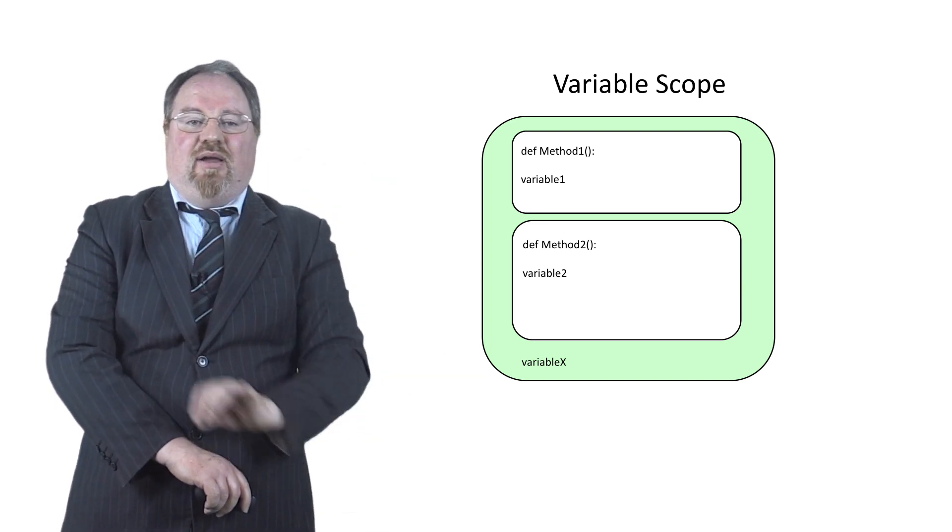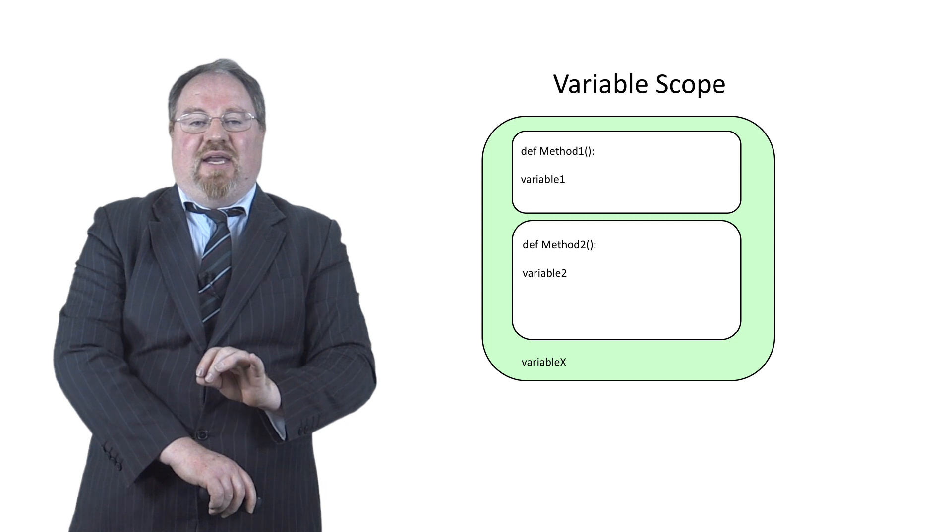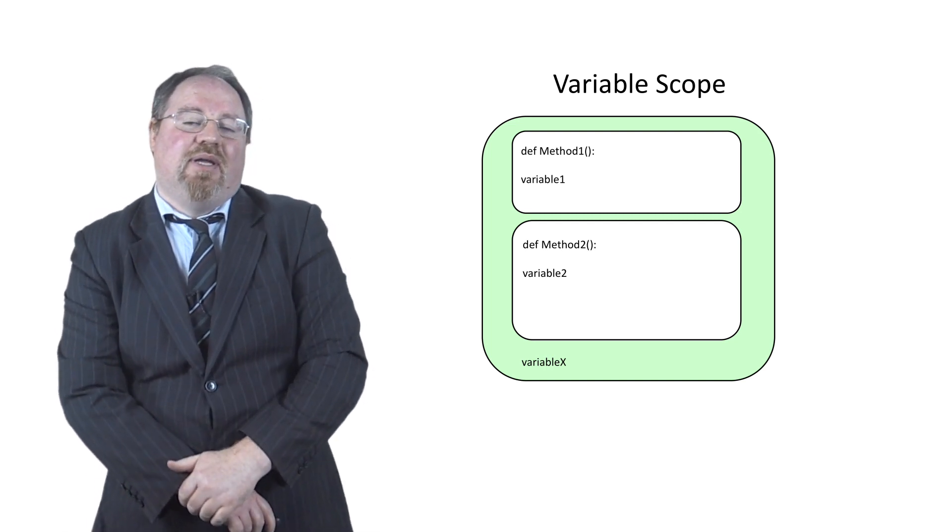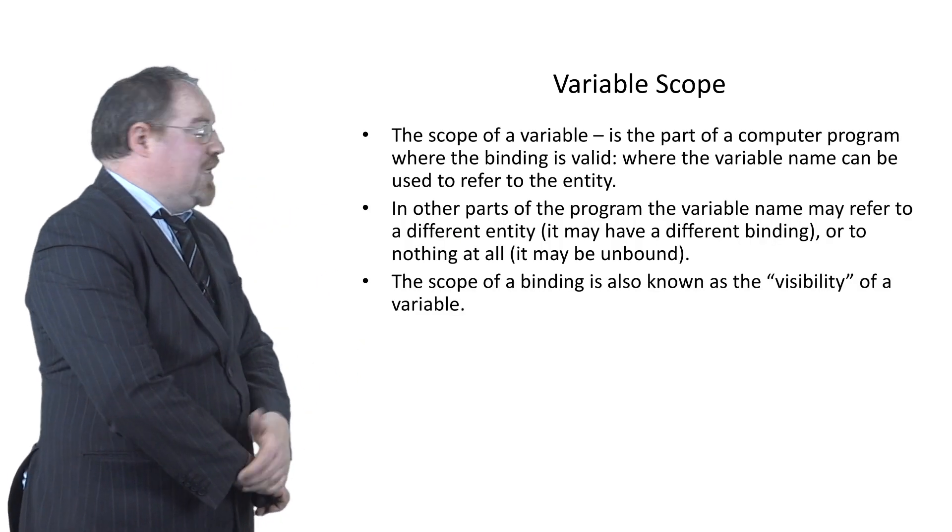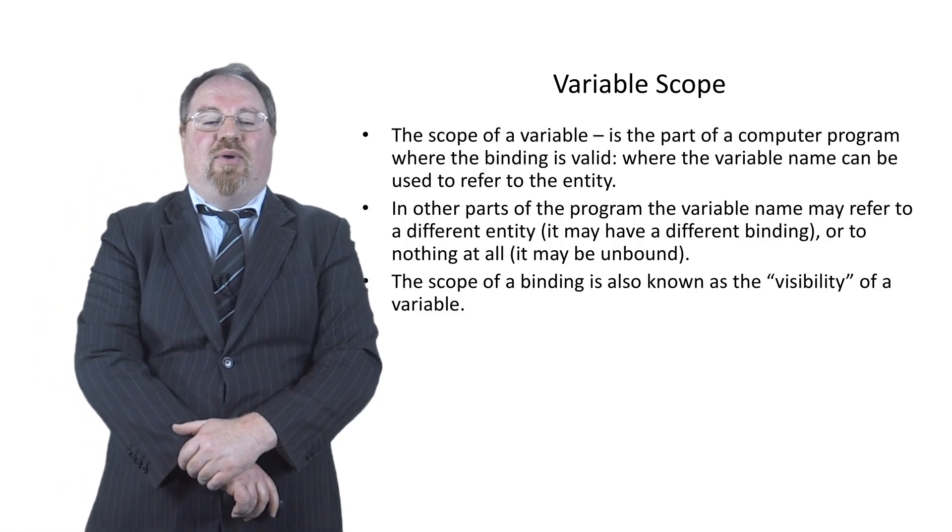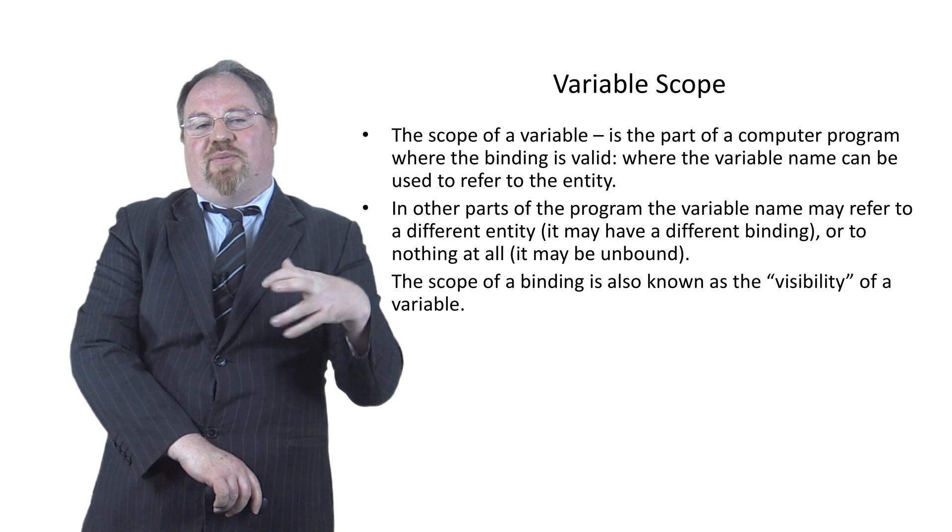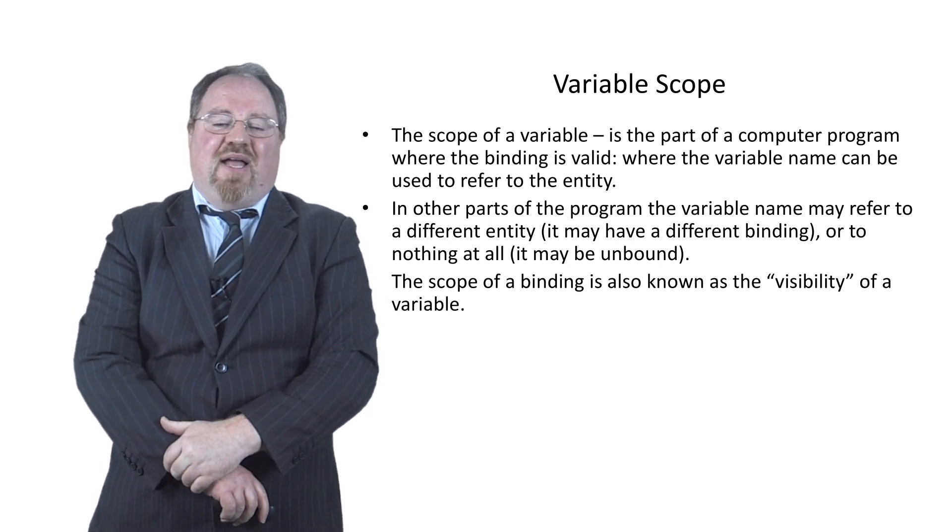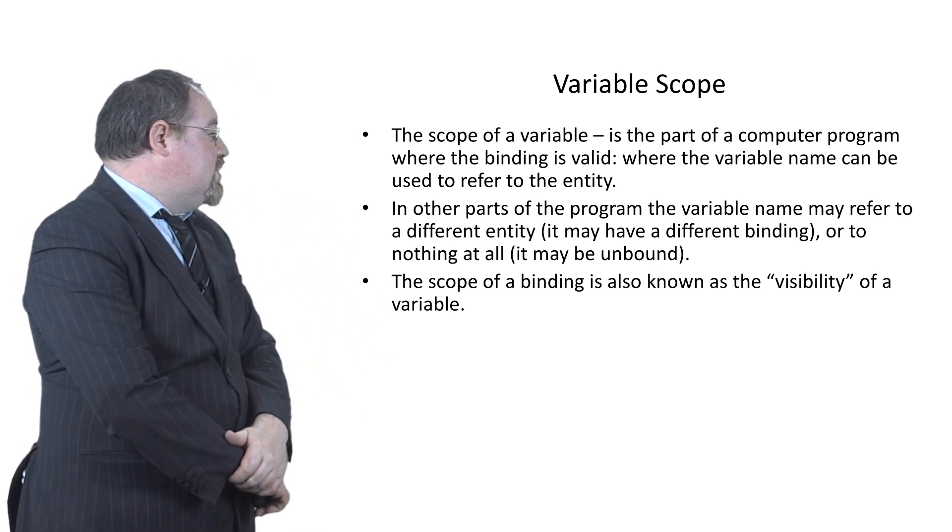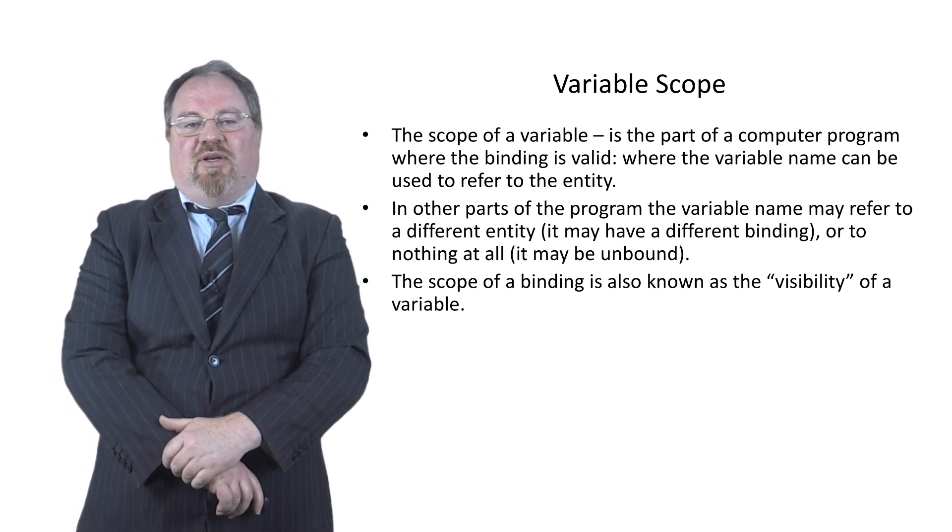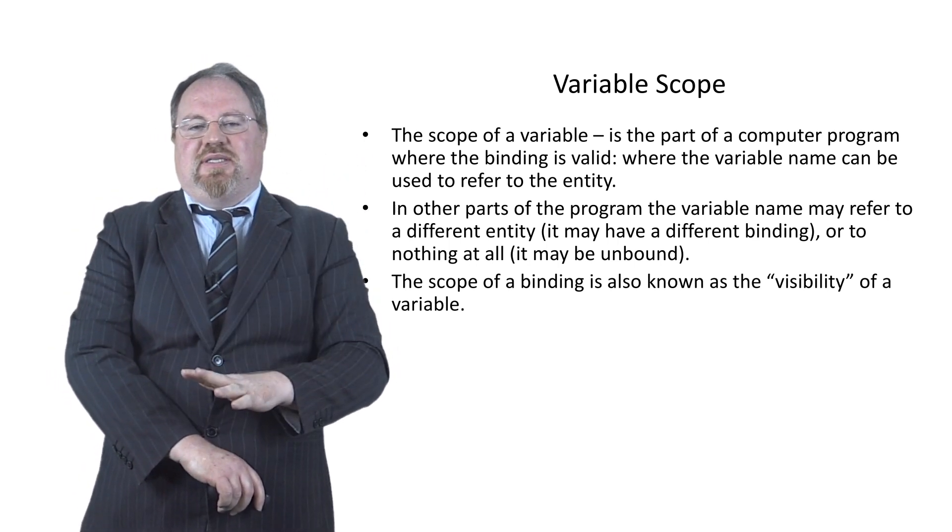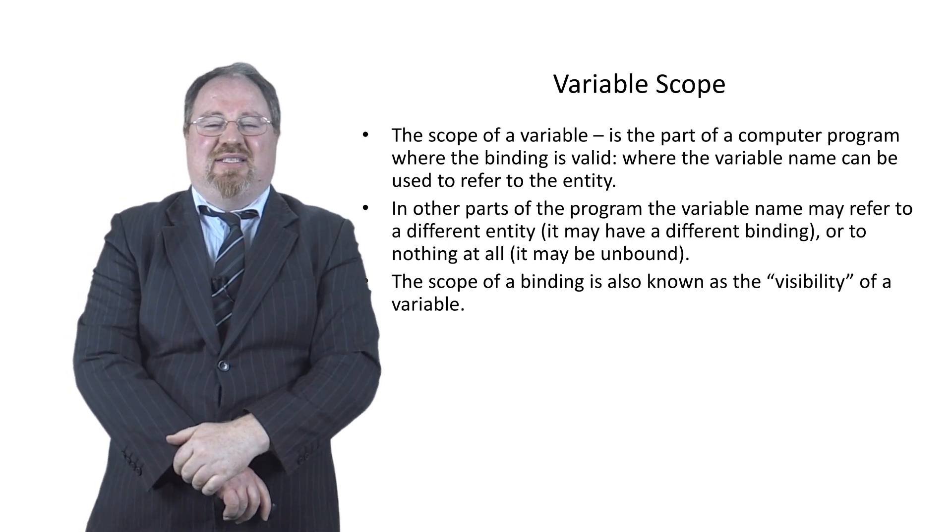If I declare a variable though outside of any modules in the main program, then we call that a global variable because all modules can see it. So that's the scope of a variable. It's simply what part of the program or the binding or variable value is valid. So it's either a local variable or a global variable. Global means all the modules can see it. Local means only the current module can see it.